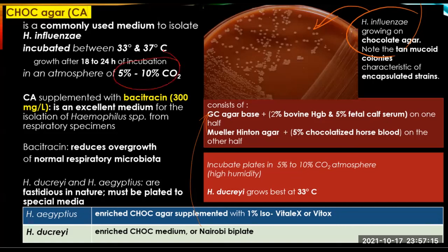Bacitracin is added to decrease overgrowth of normal respiratory microbiota — this is a significant challenge to the isolation of Haemophilus species. Growth on chocolate agar is usually seen after 18 to 24 hours of incubation. Because of their fastidious nature, specimens submitted for H. ducreyi and H. aegyptius must be plated to special media.